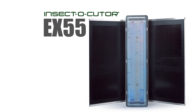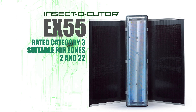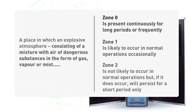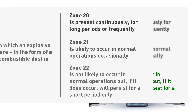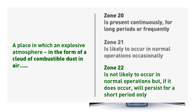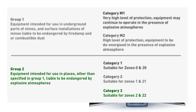The Peltis Insectocuter range of electric fly killers includes the EX55, which is the Category 3 ATEX rated unit. The EX55 unit is suitable for zone 2, where a gas, vapour or mist is not likely to occur in normal operations but will persist for a short period only if it does, and zone 22, where a cloud of combustible dust is not likely to occur in normal operations but would persist for only a short period if it did. The EX55 falls into Group 2, Category 3 in the ATEX equipment chart.